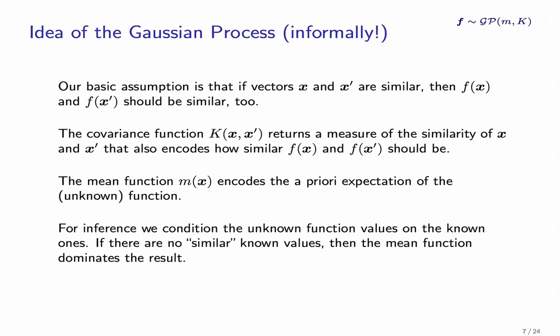So that was the formal definition. Informally, what we are trying to do with the Gaussian process is to encode that if we have two vectors that are close to each other, then their function value should be similar too.